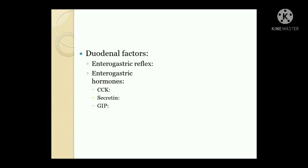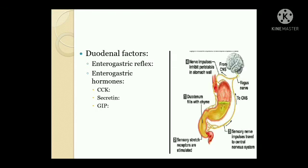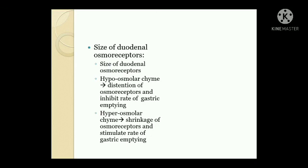Other factors are duodenal factors. One is the enterogastric reflex: when receptors in the duodenal mucosa are stimulated by distension, acidity of content, osmolarity, or presence of fat and protein, impulses pass to the stomach through the myenteric plexus and inhibit gastric emptying. Second, enterogastric hormones: cholecystokinin acts by blocking the excitatory effects of gastrin on gastric smooth muscles. Secretin has a direct inhibitory effect on smooth muscles. Gastric inhibitory peptide (GIP) also reduces gastric motility. Duodenal osmoreceptors also affect gastric emptying — hypo-osmolar chyme causes distension of osmoreceptors and inhibits gastric emptying, while hypo-osmolar chyme causes shrinkage of osmoreceptors and stimulates gastric emptying.